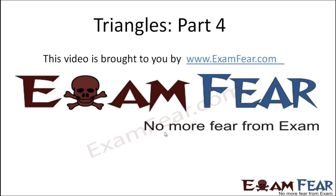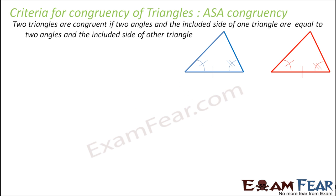Hello friends, this video on triangles part 4 is brought to you by examfear.com. From our activity, we have seen that triangles are congruent if two angles and the included side in one triangle is equal to the two angles and the included side of the other triangle. Let one triangle be ABC and the other be DEF, and we have seen this in the activity.